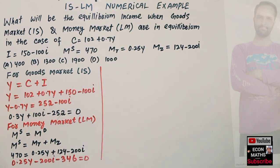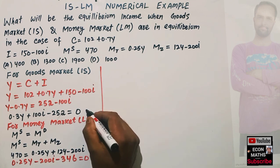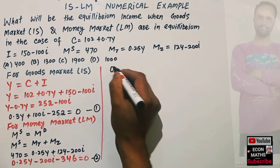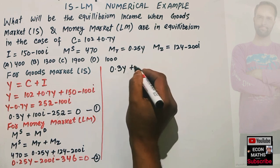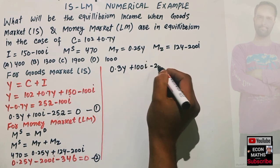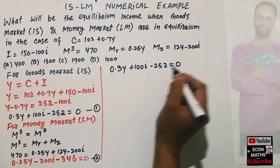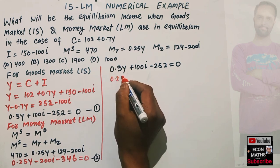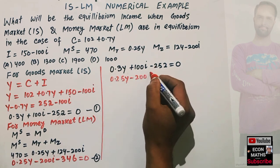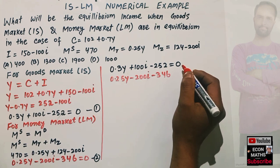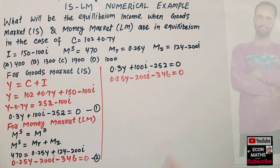So we now have two equations. Equation 1 (IS): 0.3Y + 100i - 252 = 0. Equation 2 (LM): 0.25Y - 200i - 346 = 0. We need to solve these two equations in two variables, Y and i.